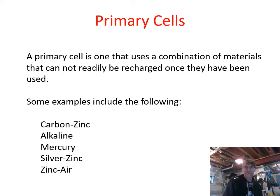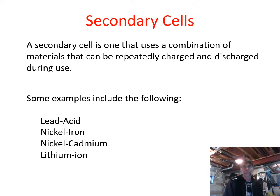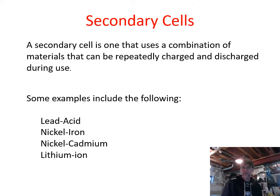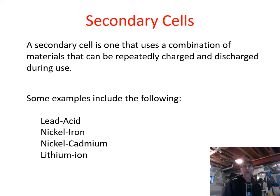A secondary cell means we can drive the reaction in the opposite direction. The chemical reaction naturally happens in one direction, releasing energy and creating voltage, but we can apply energy to drive the reaction back the other way so it can react again and create voltage again — it can be repeatedly charged and discharged. Examples of secondary cells include lead-acid (your car battery, which recharges every time your car is running), nickel-iron, nickel-cadmium, and lithium-ion.